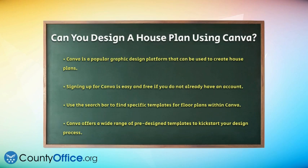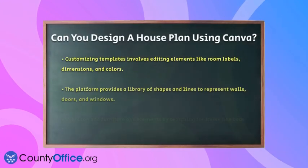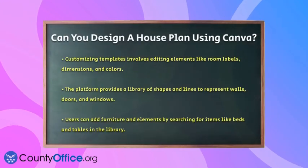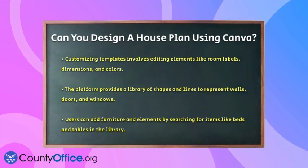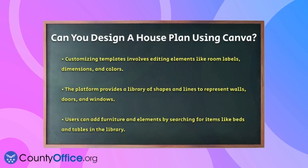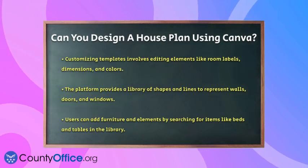Now, let's talk about customizing your chosen template. Click on the elements within the template to edit them. You can change room labels, dimensions, and even colors to fit your vision. Canva has a library filled with shapes and lines that you can use to represent walls, doors, and windows. This makes it simple to create a layout that reflects your ideas.